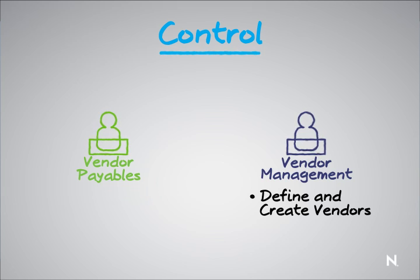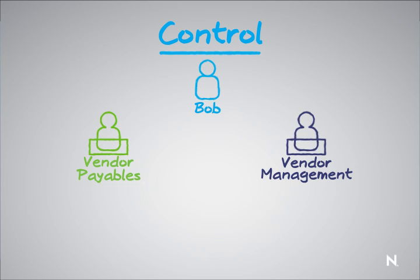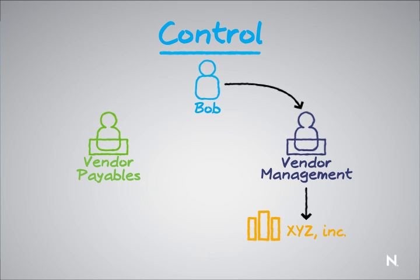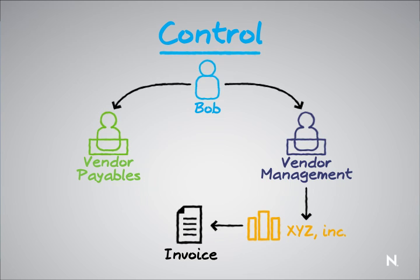Now, let's take an example here, and we're going to have Bob — because I call everybody Bob in these examples. So I have Bob here, and I'm going to make Bob an occupant of the vendor management role. So now he can come through and he creates vendor XYZ, Inc. Now that this vendor is inside the system, they can submit invoices for particular tasks. Here's where separation of duty comes into play. It's fine to allow Bob to do this, but if I also made him an occupant of the vendor payables role, well, Bob would now be able to go and authorize payment to those invoices.